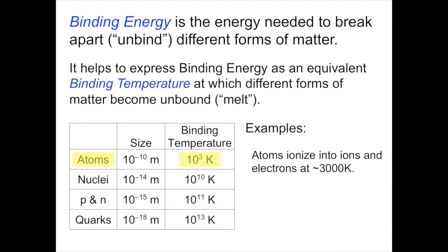For example, atoms ionize into ions and electrons at about 3000 degrees Kelvin. Nuclei in the cores of massive stars begin to melt when the temperature exceeds about 10 billion degrees Kelvin. If you remember back to unit two, when we talked about the evolution of massive stars, it was when the core of the star reached 10 billion degrees that the nuclei began to melt and hastened the start of the collapse that led to a supernova.